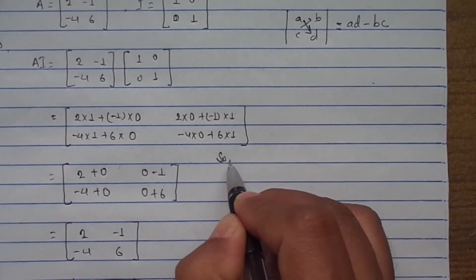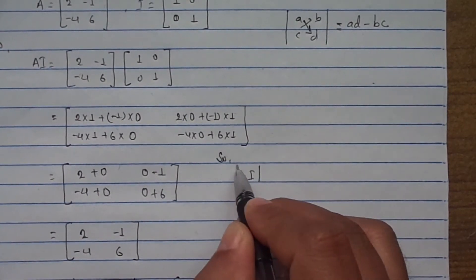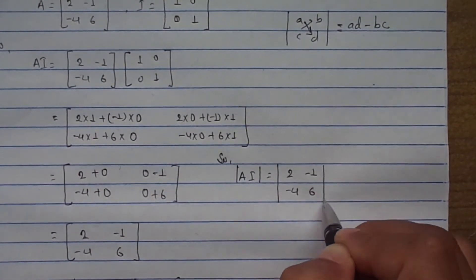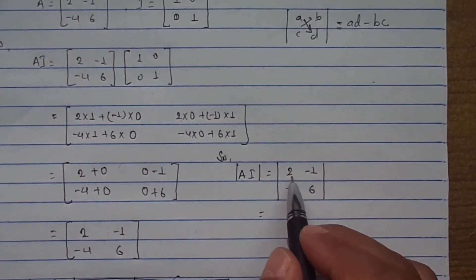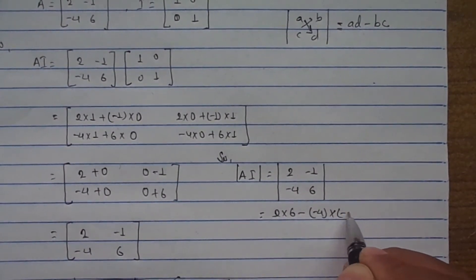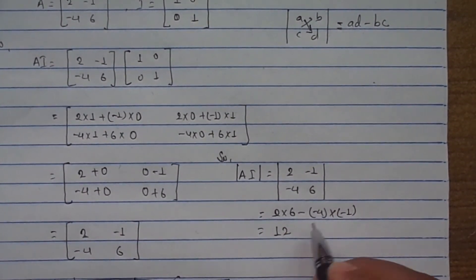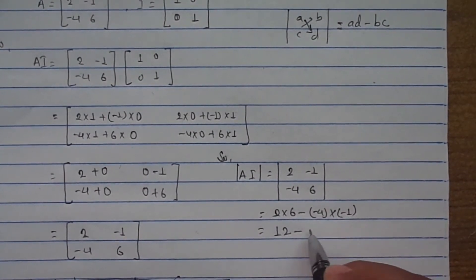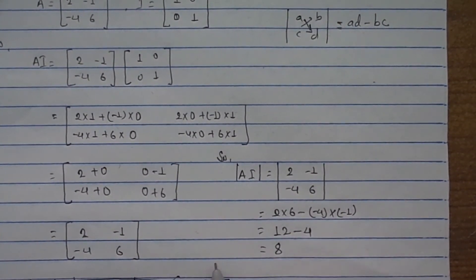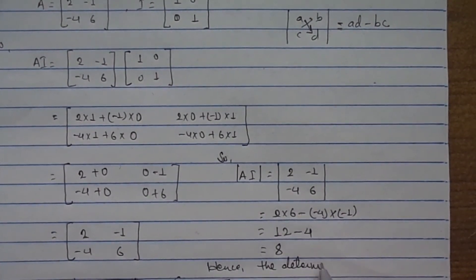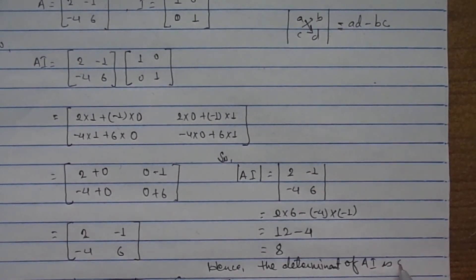Now the determinant of AI equals the determinant of [2, -1; -4, 6]. We multiply 2×6 minus (-4)×(-1). That is 12 minus 4, which equals 8. Hence the determinant of AI is 8.